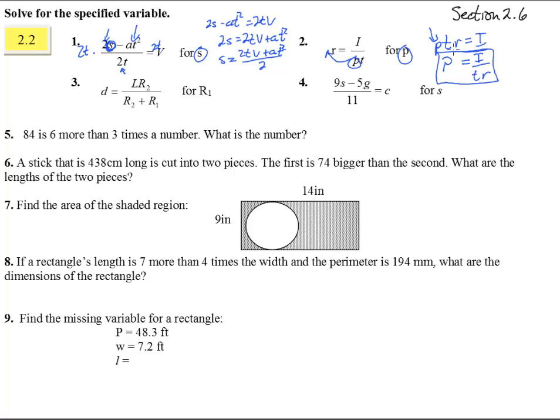So we have number 3. We're trying to get r1 by itself, and there's our r1. It's on the bottom. So we've got to take this whole chunk, this whole piece, and times it to both sides so that we get it up by itself there.